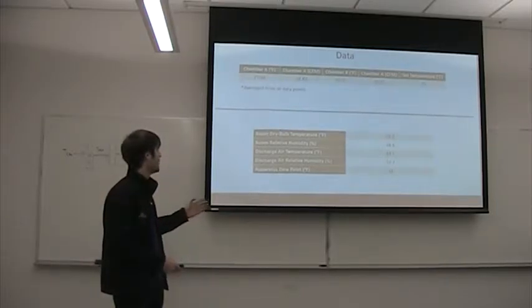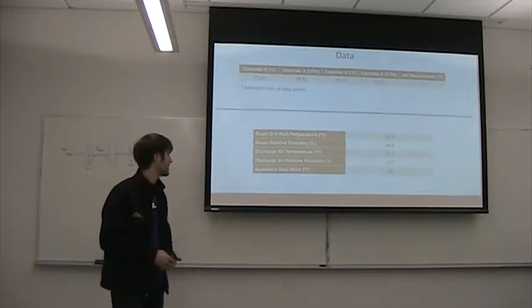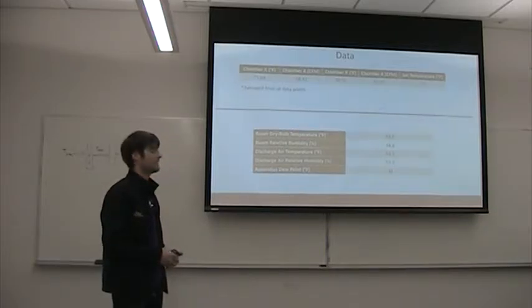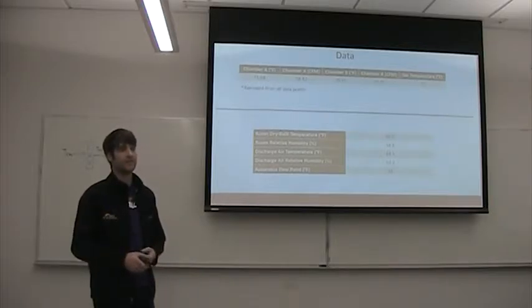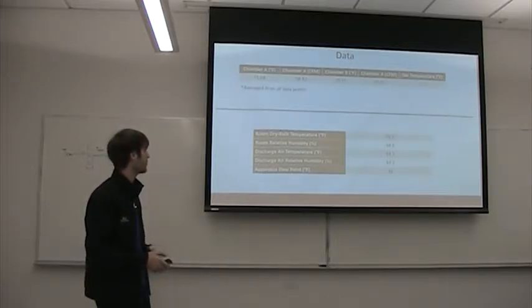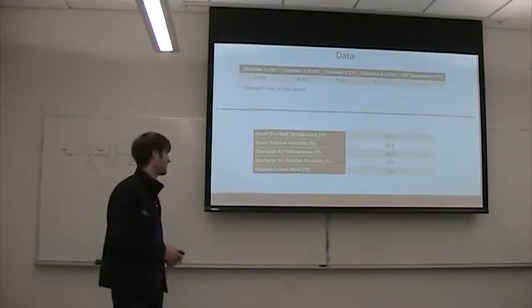And then chamber B, the average temperature was 70.55 degrees, and the CFM was 19.35 cubic feet a minute. And the set temperature was 71 degrees for both rooms. So you can immediately see that chamber A took far less air to keep the same temperature because it had the dual-pane glass windows.